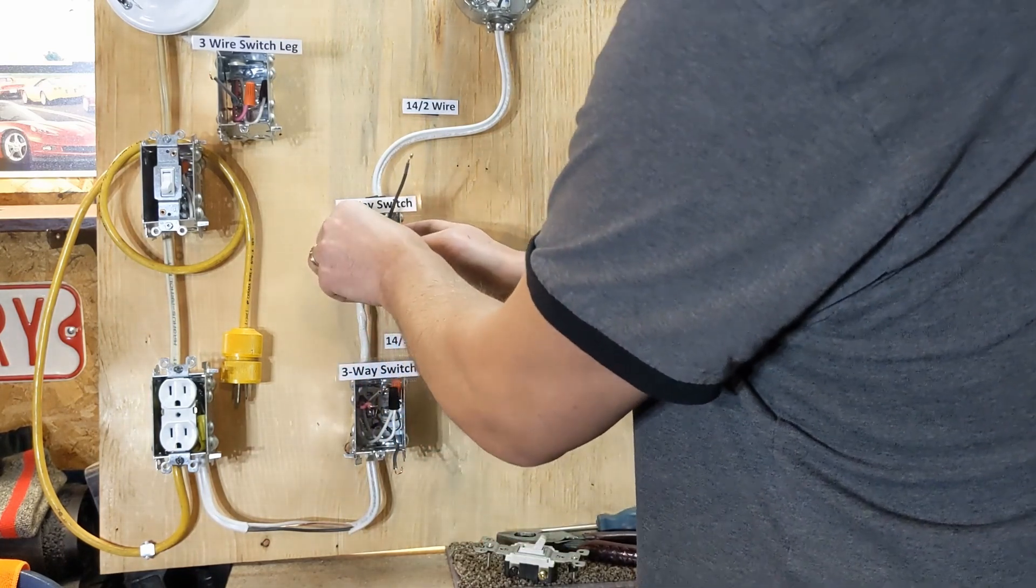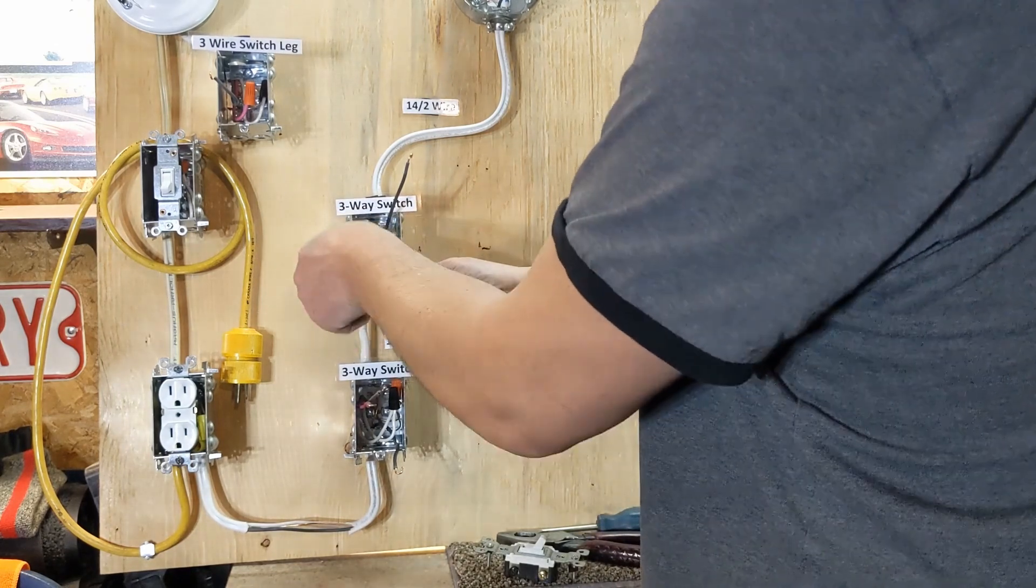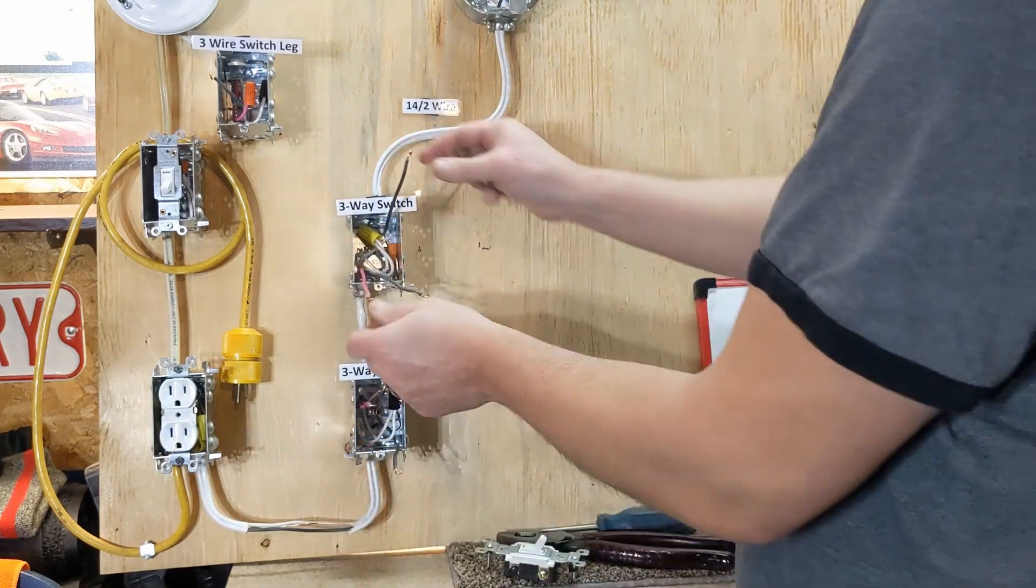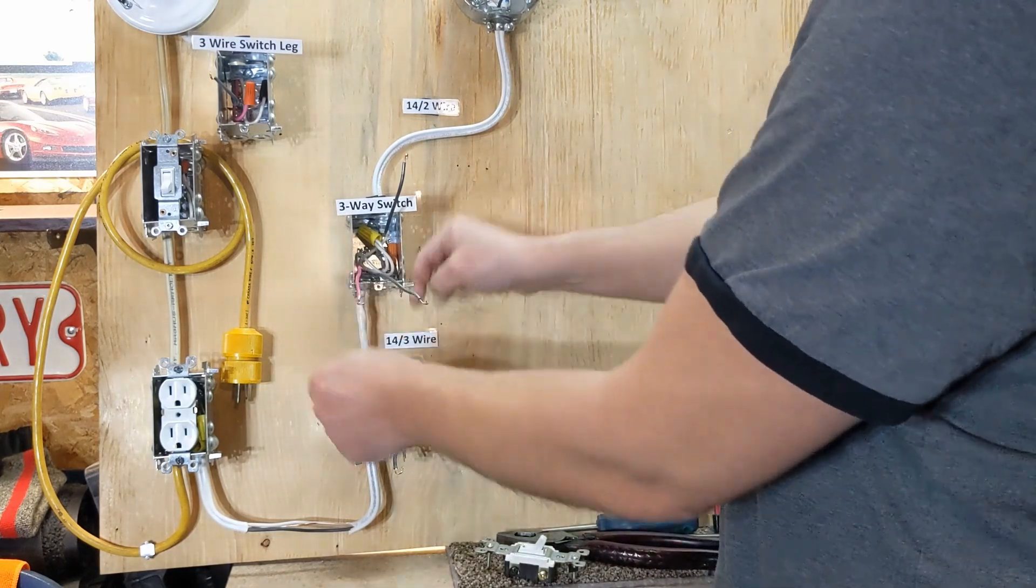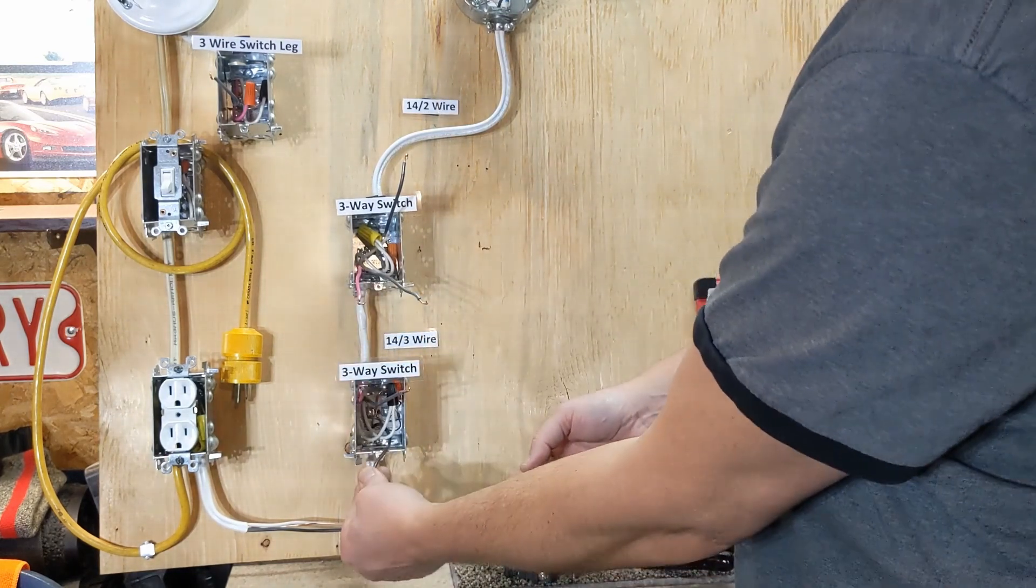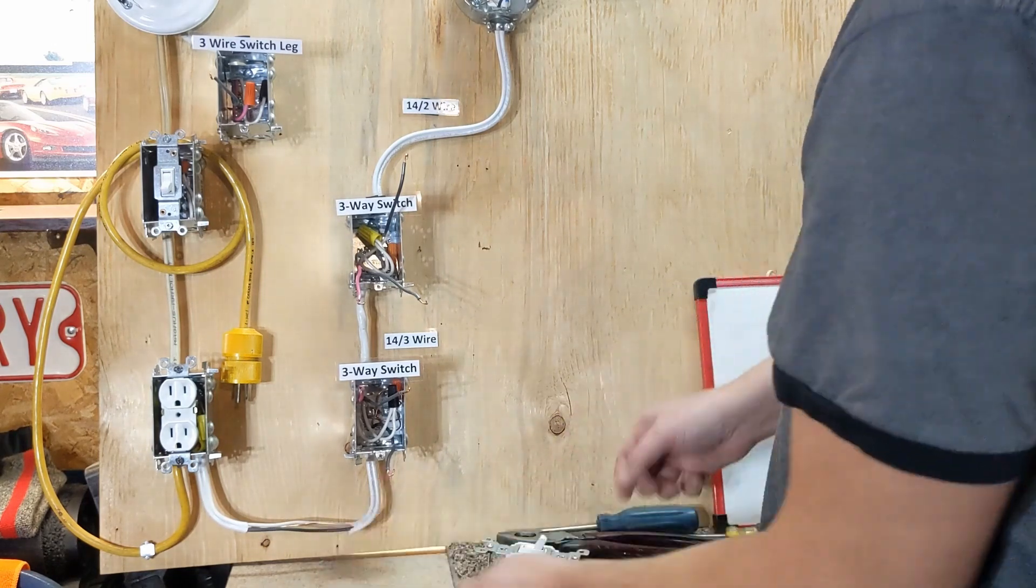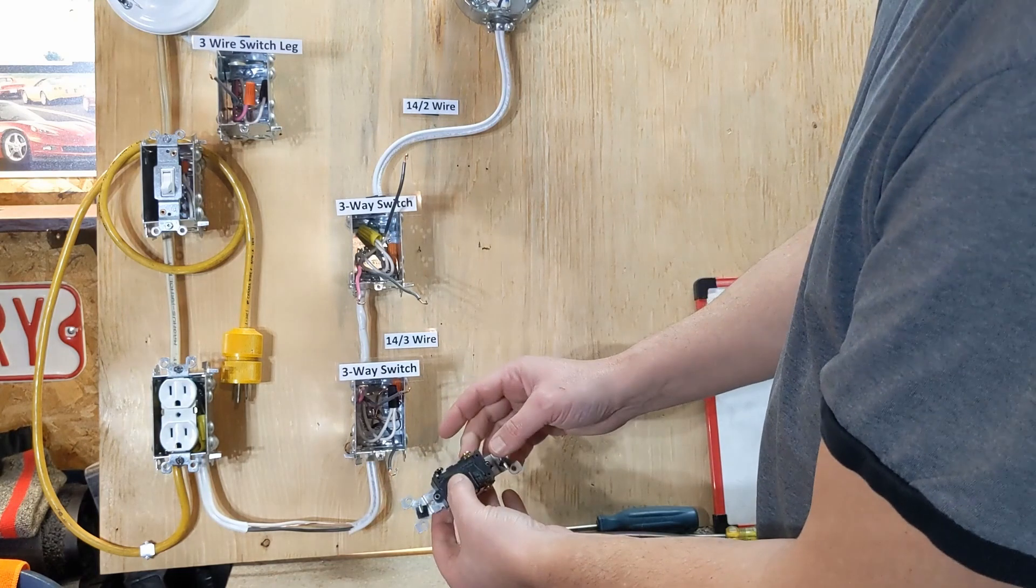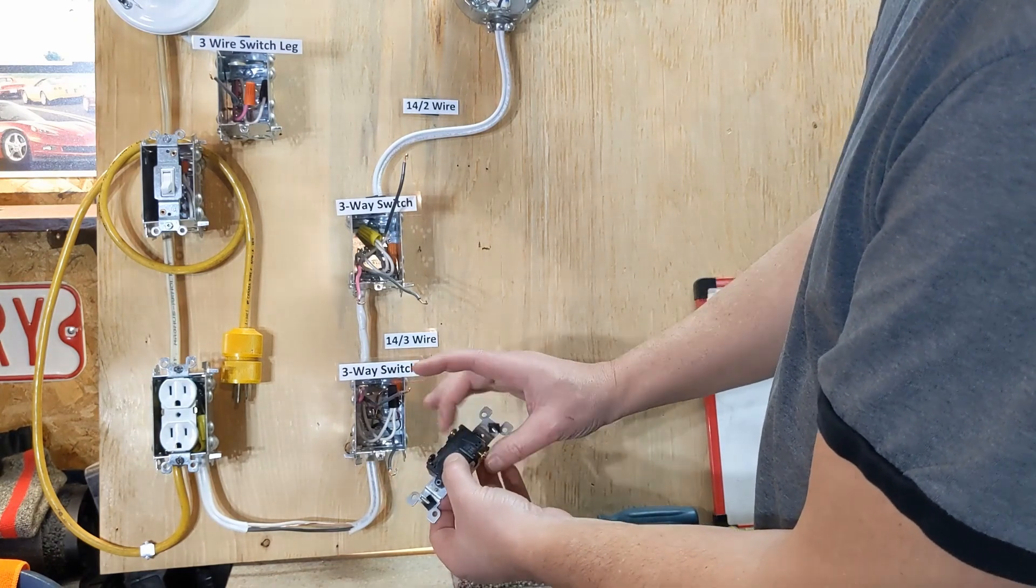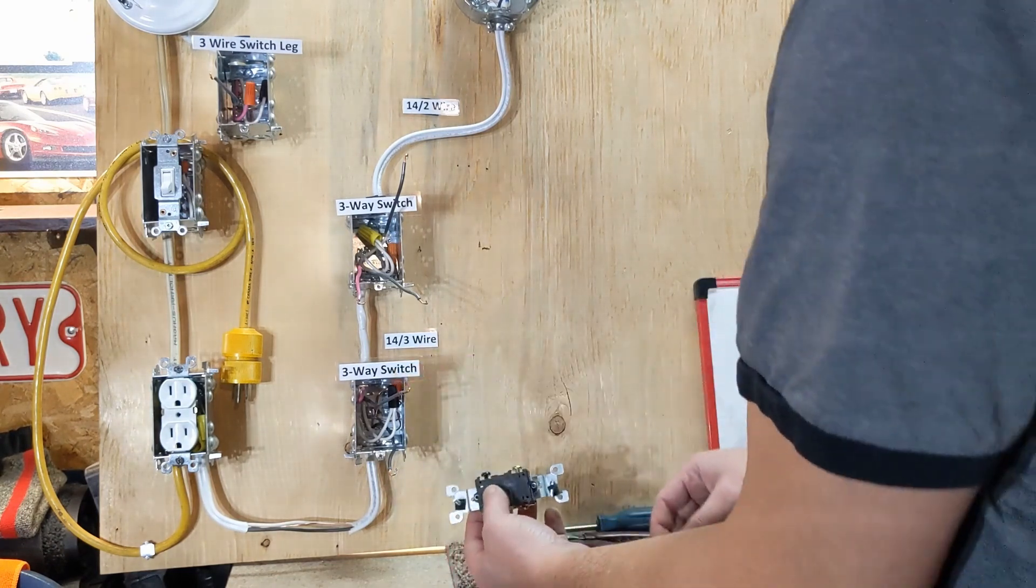Okay, so now we're left with black heading up, red, and the black heading down, the other end of the red and the black that's coming in our main power. So we'll start at the bottom one. Main power goes to that one. These are our travelers.